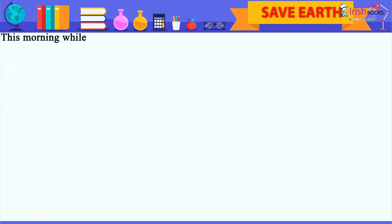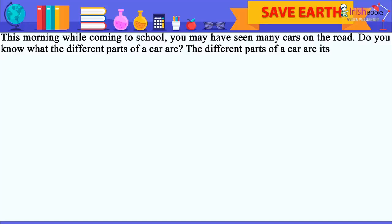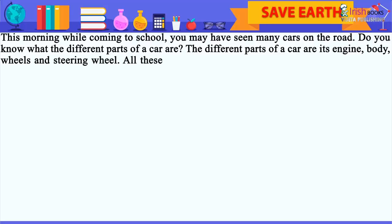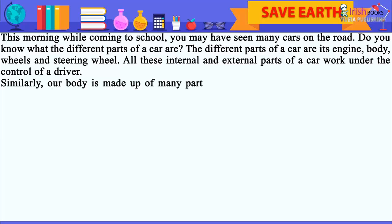This morning, while coming to school, you may have seen many cars on the road. Do you know what the different parts of a car are? The different parts of a car are its engine, body, wheels and steering wheel. All these internal and external parts of a car work under the control of a driver. Similarly, our body is made up of many parts called organs.